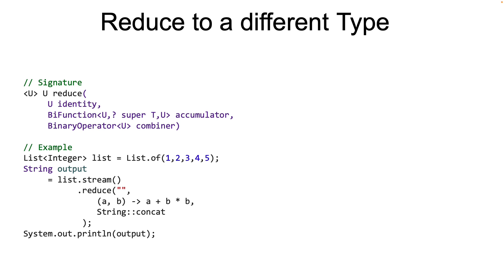Consider the example on the screen with the same list containing integers 1 to 5. We now want the output of the reduce method to be a string — a different type than the stream element type integer. Specifically, we want to square each element of the list and then concatenate all of the resulting squares into one string. The first parameter is an empty string, which is the identity value for the combiner. An empty string added to any other string results in the same string, so it qualifies as an identity. The second parameter is the accumulator BiFunction where the first parameter is the string and the second is the integer.